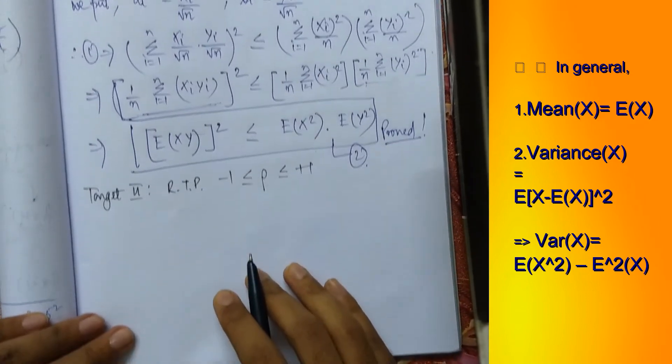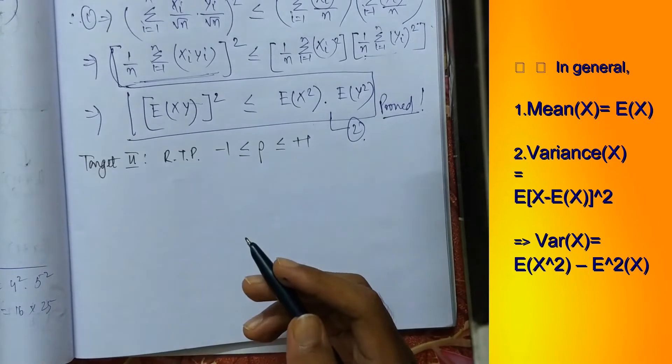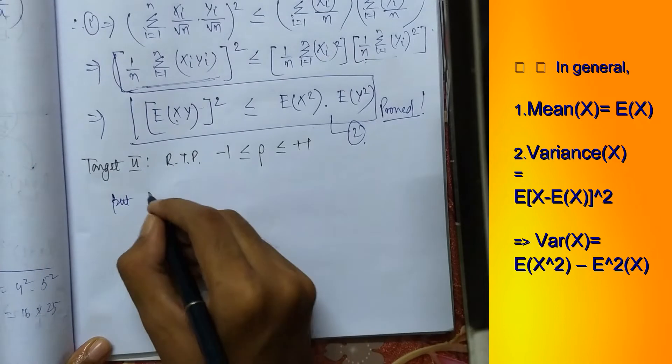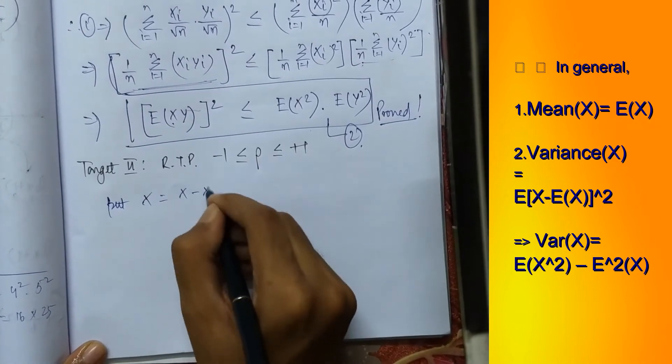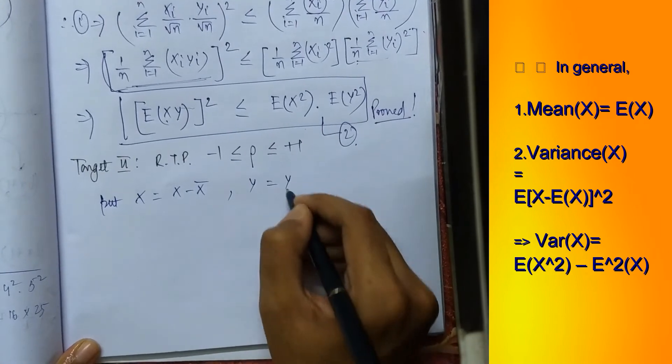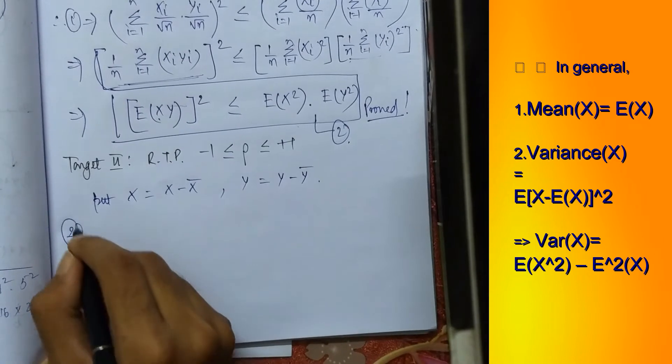And we will also here put a couple of substitutions and our proof will be done. Say we put in place of x, x equals to x minus x bar and y equals y minus y bar. Putting this in 2, what shall we get?